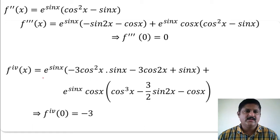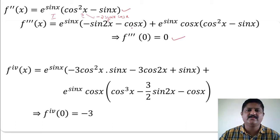Take e to the power sin x as common. Therefore f''(x) equals e to the power sin x into cos squared x minus sin x. Again differentiate this function using product rule. We get f'''(x) equals e to the power sin x into minus sin 2x minus cos x, plus e to the power sin x into cos squared x minus sin x. The differentiation of cos squared x gives minus 2 sin x cos x which becomes sin 2x, and differentiation of minus sin x is cos x. Therefore f'''(0) equals 0.